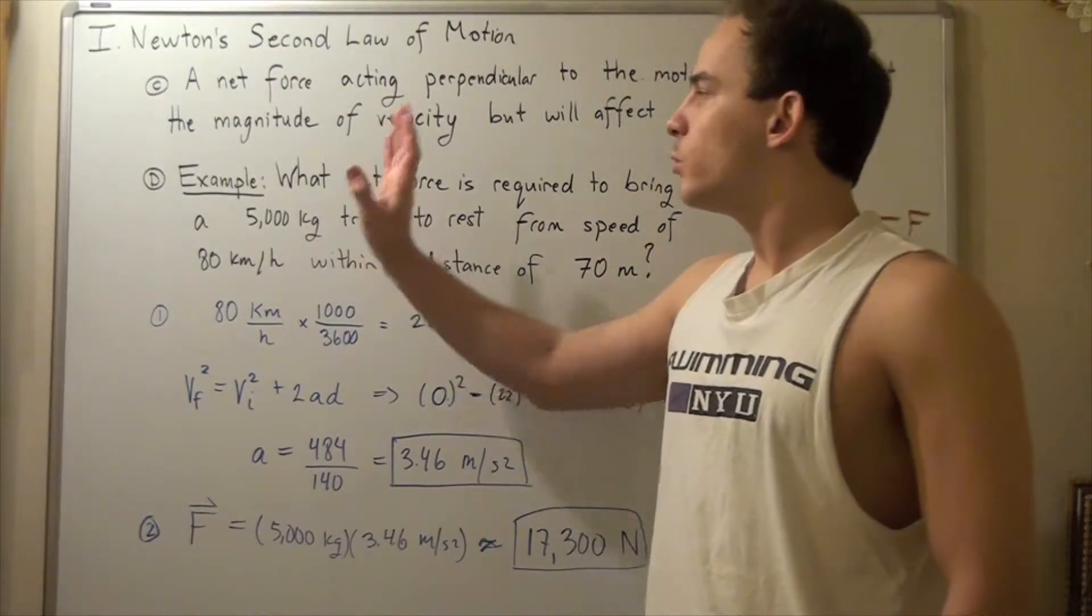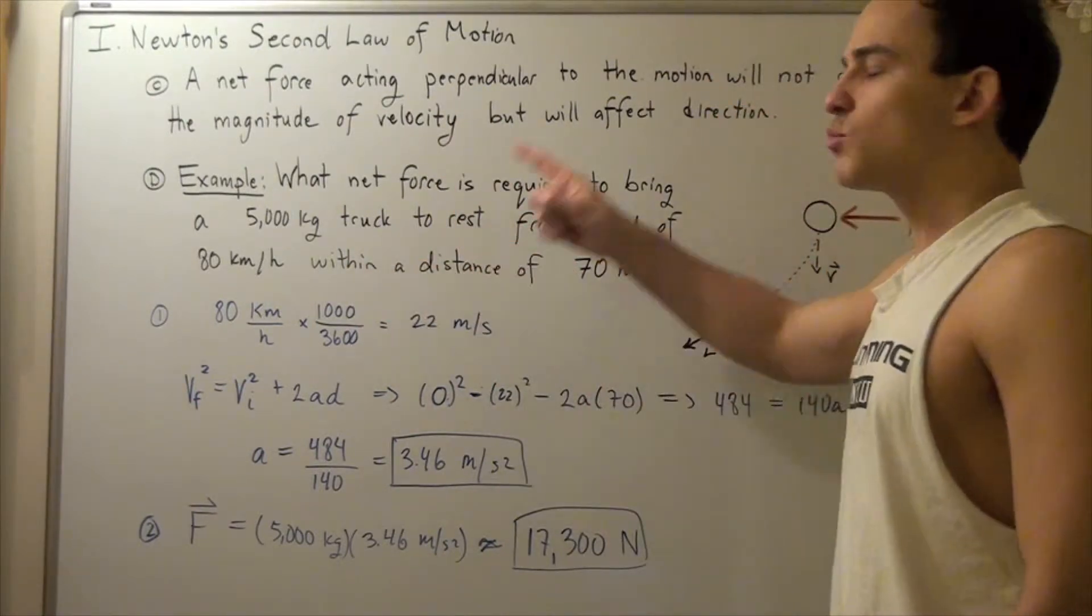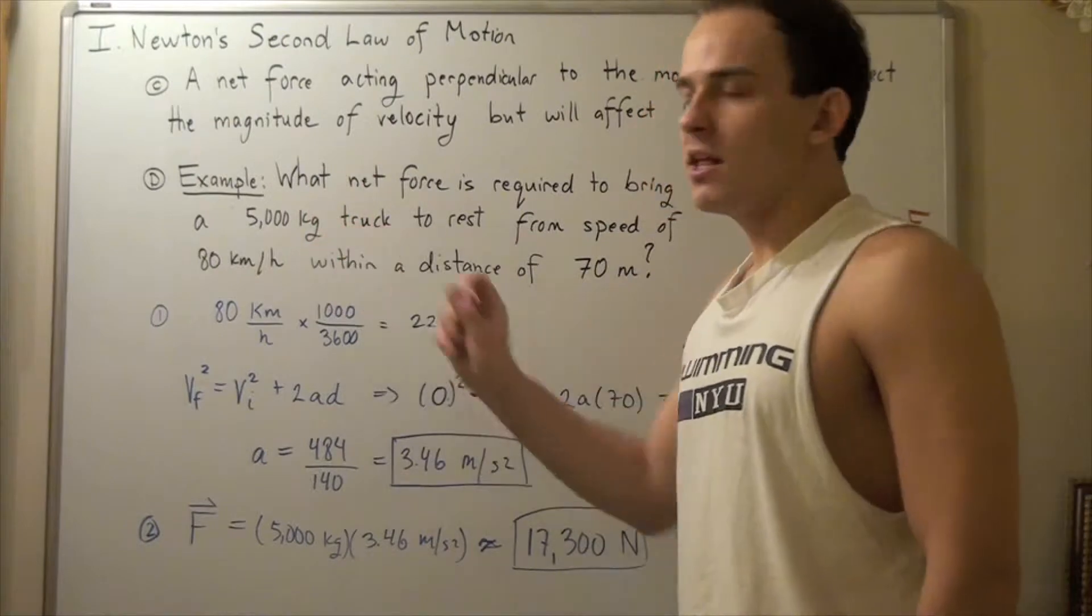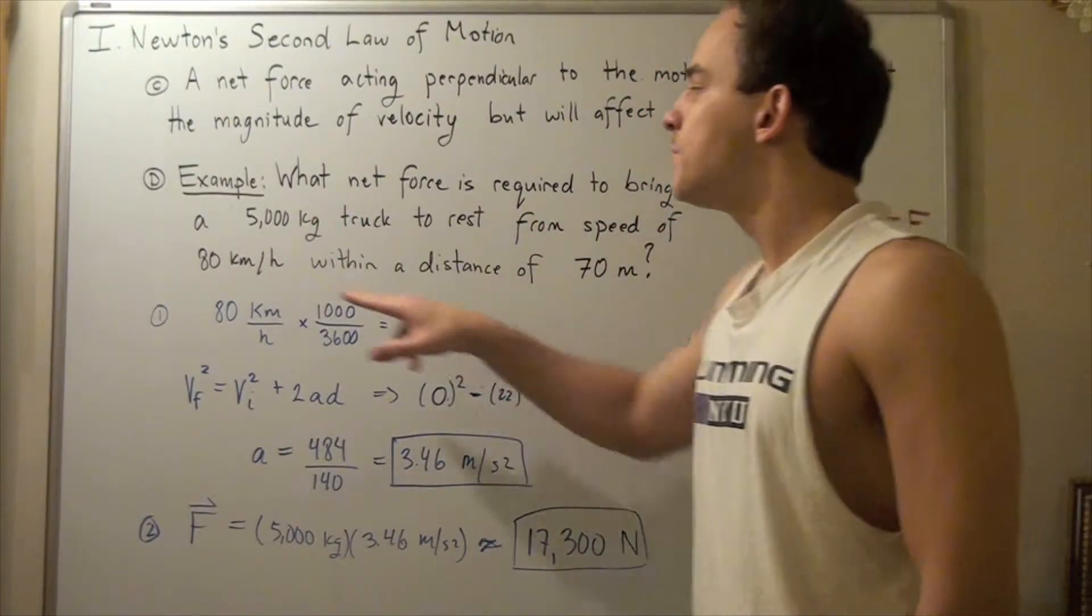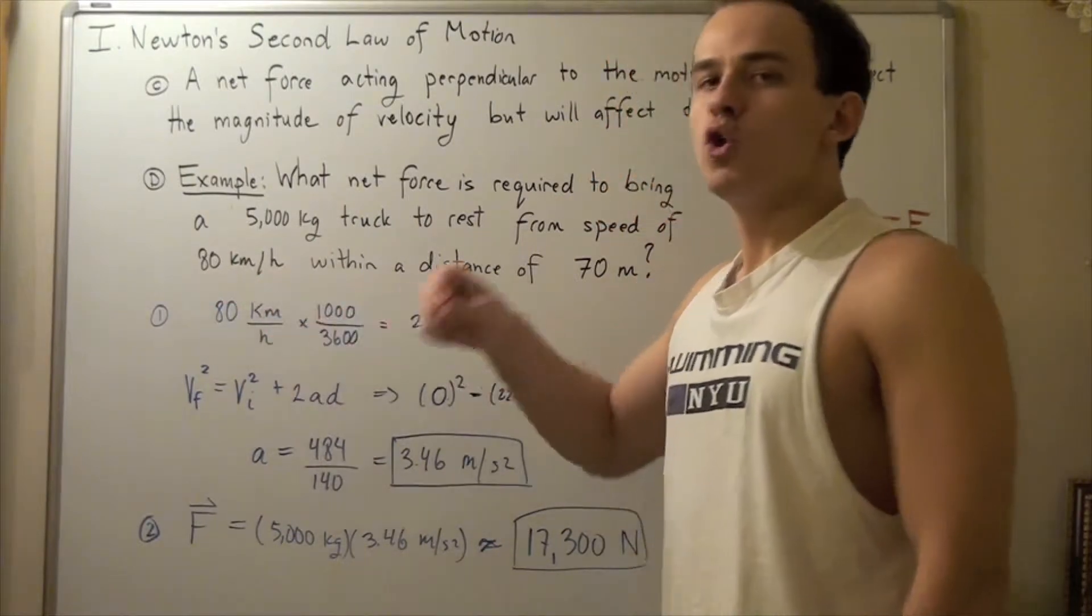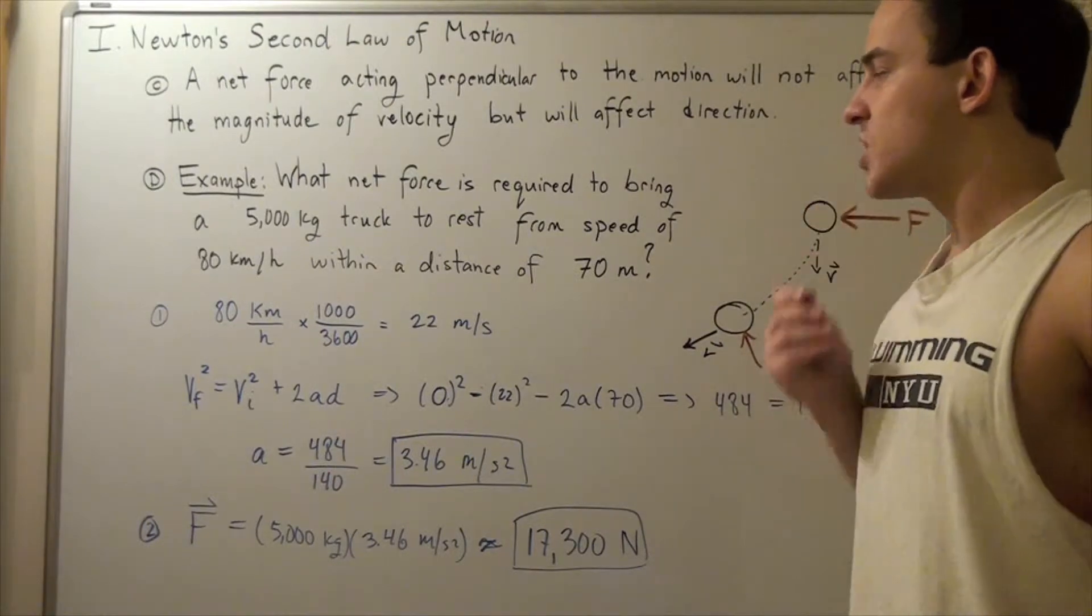So, let's look at the following example. We want to find what net force is required to bring a 5000 kg truck to rest from a speed or initial speed of 80 km an hour within a distance or displacement of 70 meters.